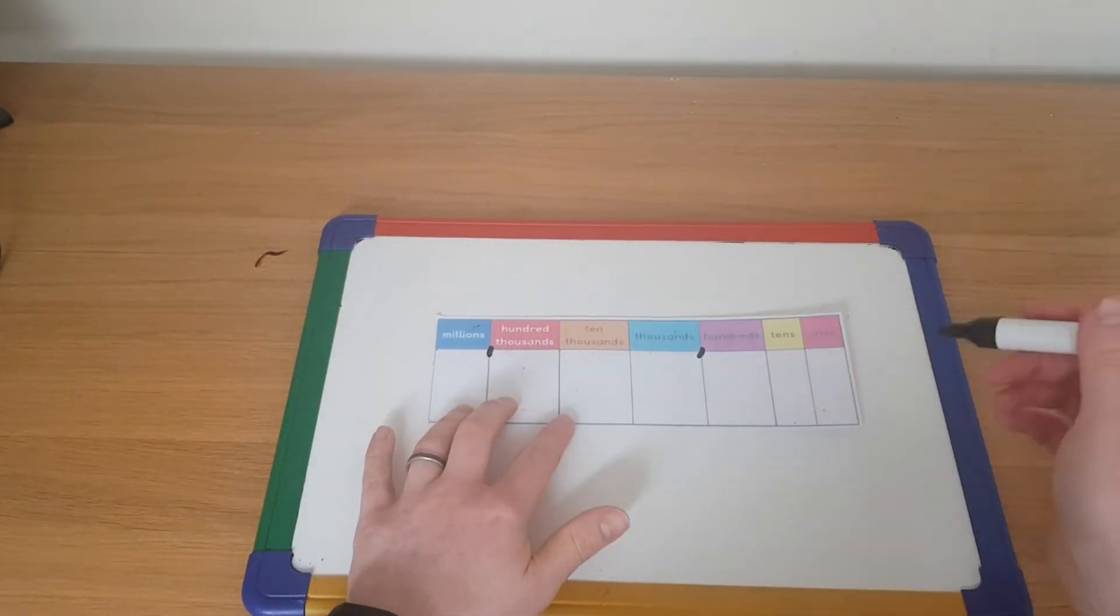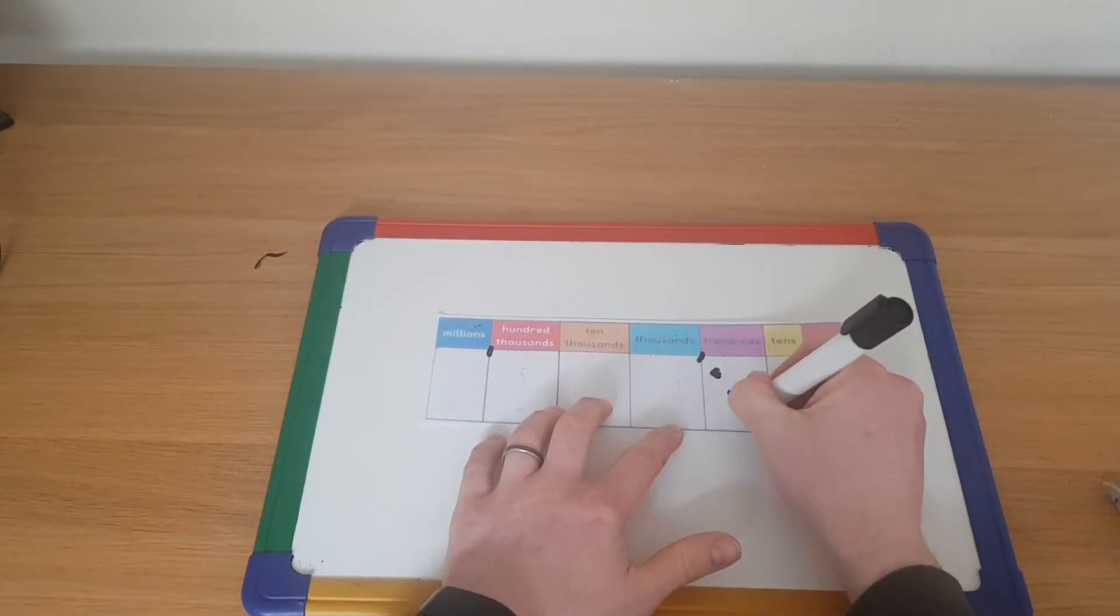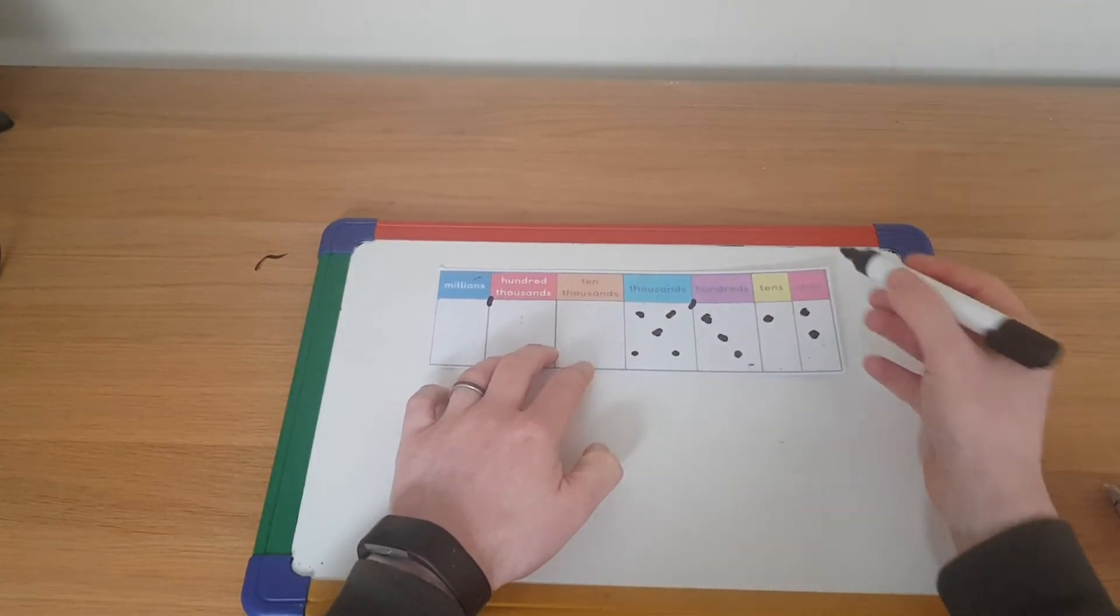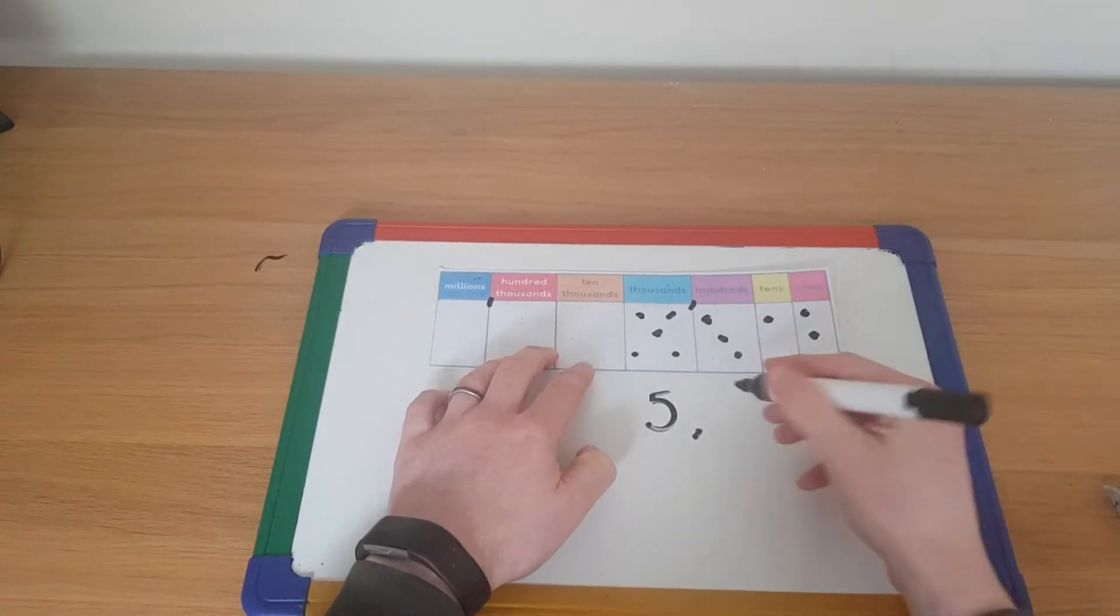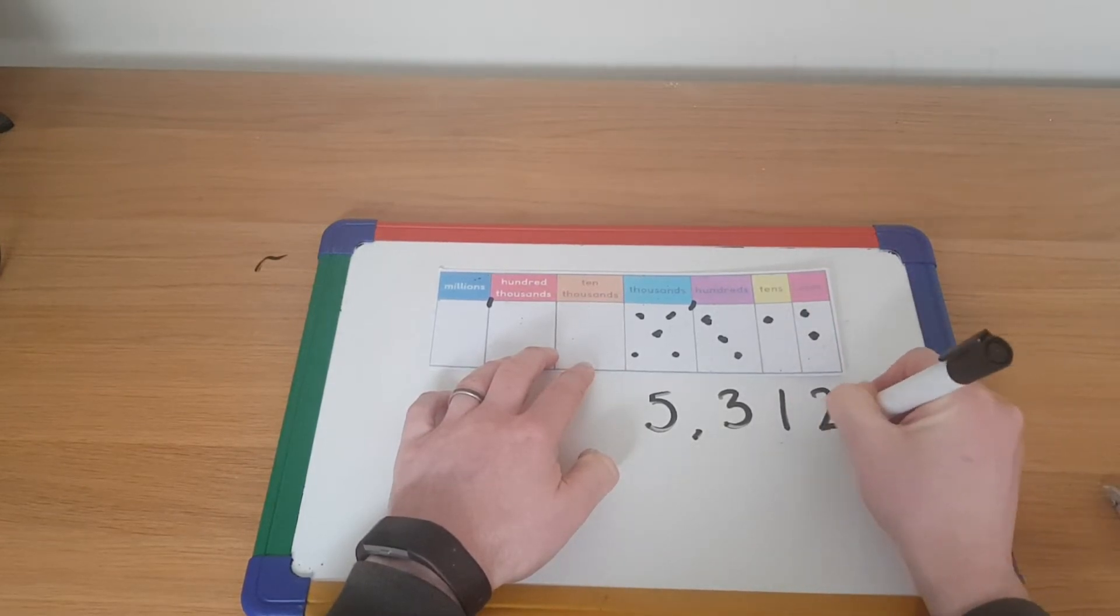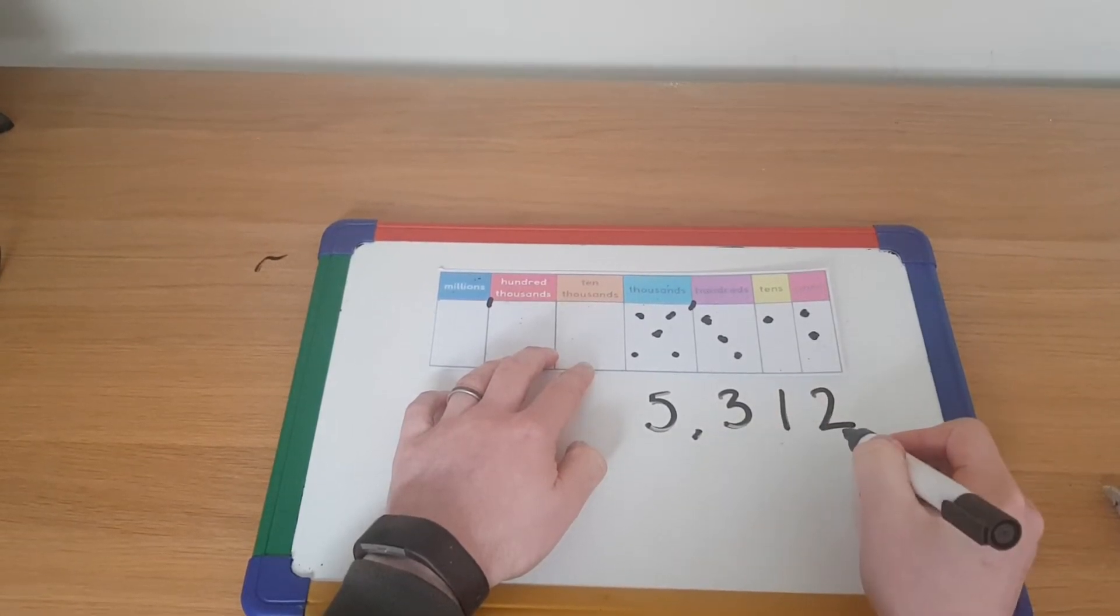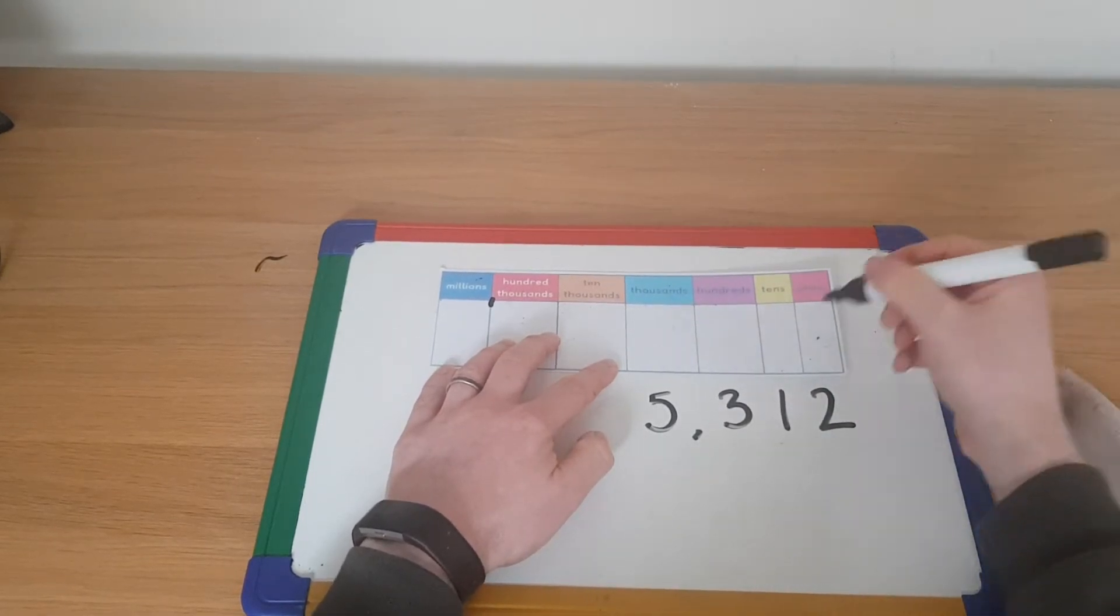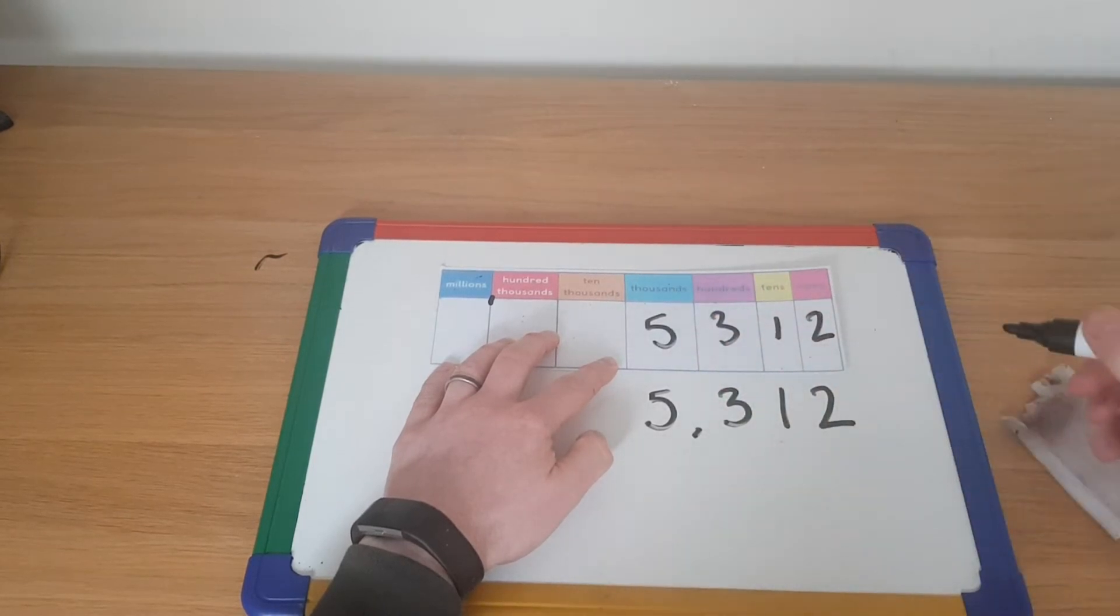So we can use this place value grid in different ways. We can put dots in there to represent a number, and then underneath we can then write out that number. So I've got five in my thousands column, put my comma in. I've got three in my hundreds column, one in my tens column, and then finally two in my ones column. So my number that that is representing is 5,312. Or if you want to as well, you could just put those digits straight in. So I've got two ones, one ten, three hundreds, and five thousands.